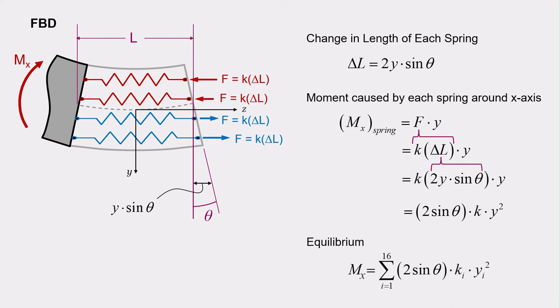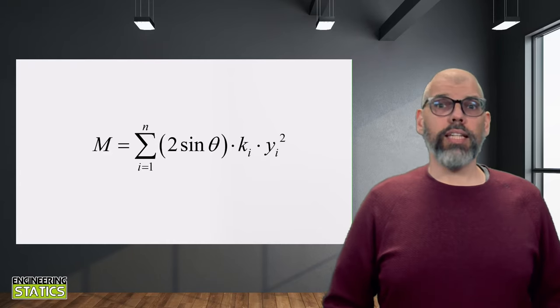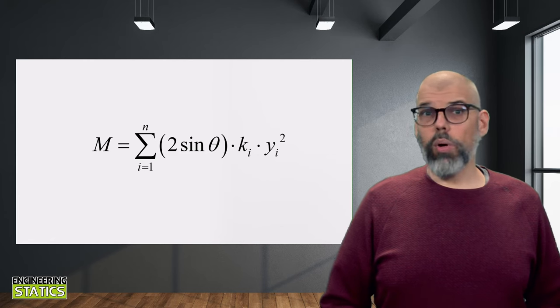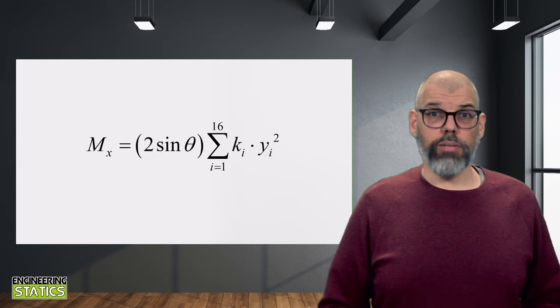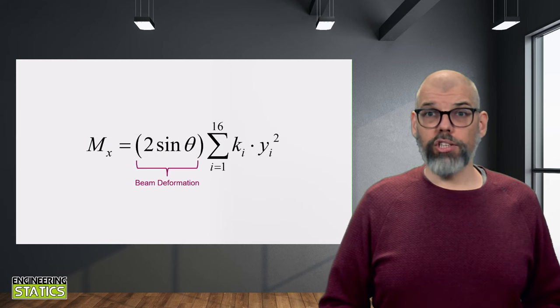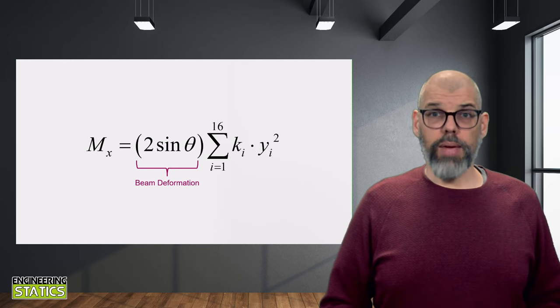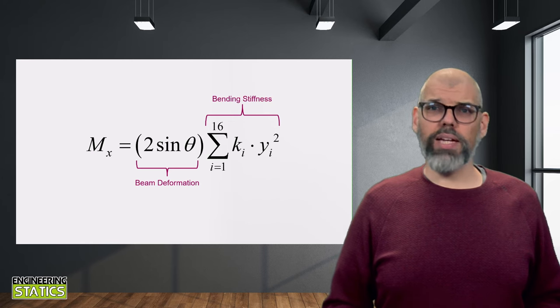Evaluating equilibrium for the cross-section, we see that the moment on the left-hand side of the free body diagram must be equal to the sum of the moments caused by the spring force on the right-hand side of the free body diagram. This results in the following expression, where i refers to the i-th spring, and 16 is the total number of springs in the cross-section: four layers of springs with four springs per layer. Let's take a closer look at this expression. We can see that the quantity 2 sine theta does not change for each spring, so it can be removed from the summation. It represents the global deformation of the segment of the beam we are analyzing. The remaining quantity in the summation is a sort of bending stiffness term.